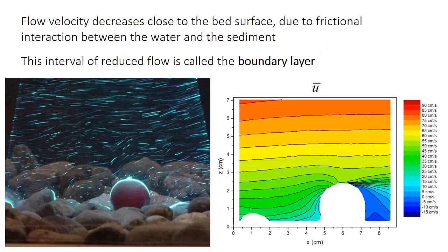First, I use the term boundary layer — what is that? The velocity of a flowing fluid, such as water in a river, tends to slow as it approaches a non-moving surface, such as the river bed or the river bank. The reason for that is that there is friction between the moving fluid and the non-moving surface. That depth interval where the flow velocity is reduced relative to what's called the free stream, or the average of the rest of the fluid, is called the boundary layer.